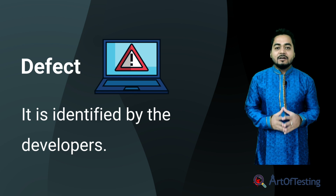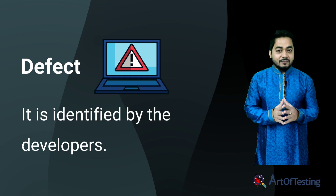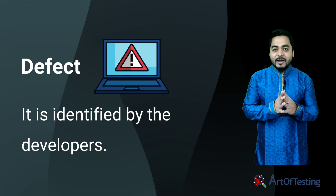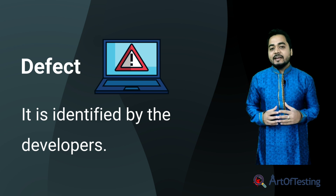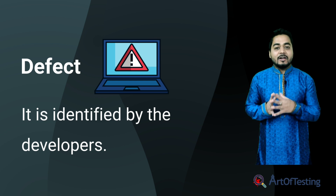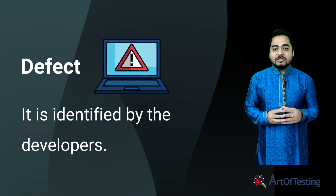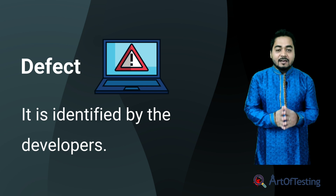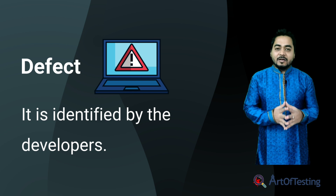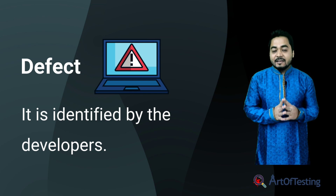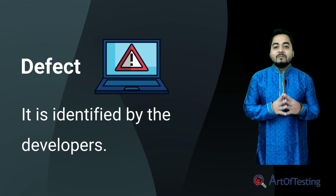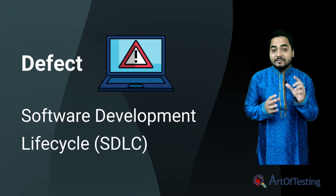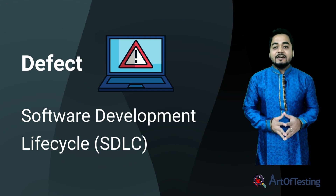Let's start with the term defect. Defect is something which is encountered by the developers. Every software development begins with some requirements. When there is a difference between the software requirement and the actual functionality of the product, that is called a defect. Defect is something that the developer himself or herself identifies while writing the code. If a developer identifies and fixes that issue before it goes to the testing phase, it is called a defect. Defect is part of the SDLC and falls under the development phase.